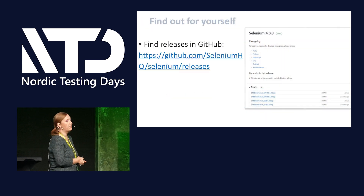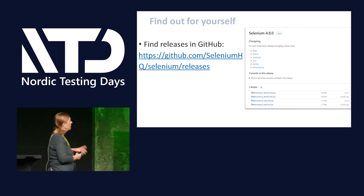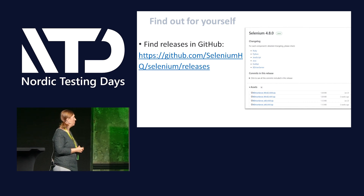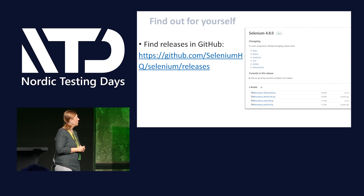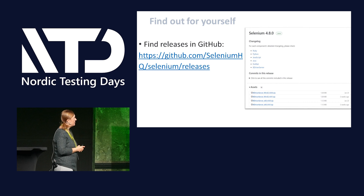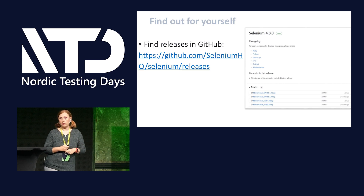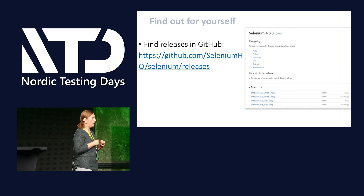I'm going to show you next how you can check out what is being released. We have several places where you can look. I'll start with the GitHub project — the Selenium HQ GitHub project where we publish the releases. For each release you can see the available assets for downloading. We support five different bindings — five programming languages: Java, .NET, Ruby, Python, and JavaScript.